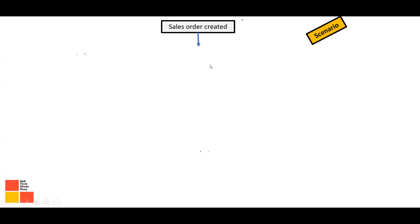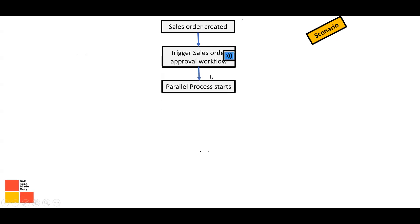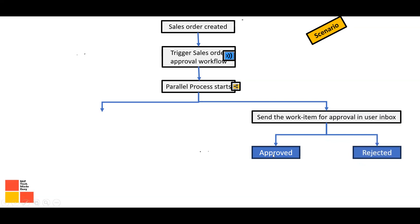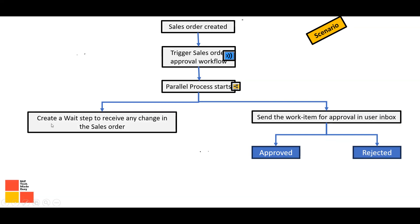In the scenario flowchart: a sales order is created, which triggers the approval workflow. After triggering, two parallel processes start using a fork. One sends the work item to the user's inbox for approval, where the approver sees Approve or Reject options. The second parallel step is a Wait step configured to receive any changes made to the sales order.